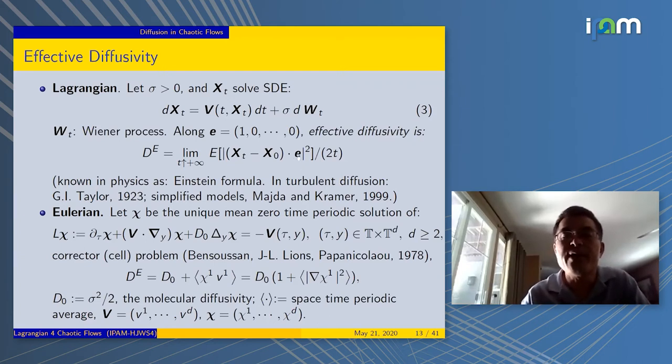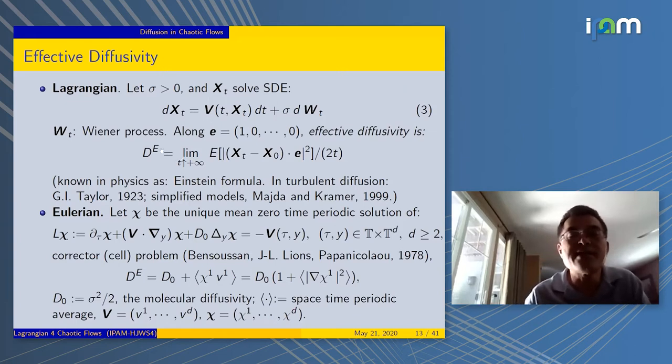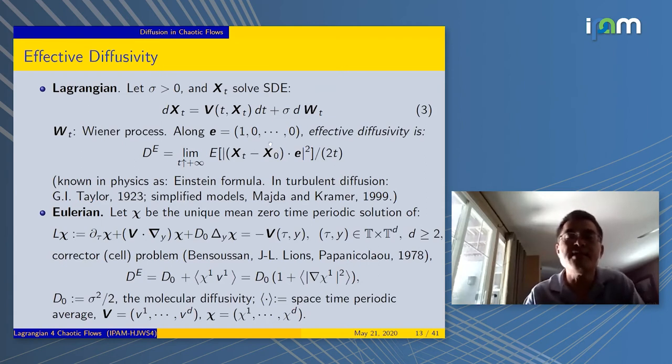You square it, take the expectation, and divide by 2t. If this quantity has a limit as t goes to infinity, then it is the effective diffusivity. It's the mean squared displacement that has been studied for a very long time in physics. This formula is called the Einstein formula, because he computed effective diffusivity for certain particle problems.